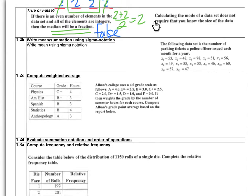The second true/false question: calculating the mode of a data set does not require knowing the size of the data set. The key is remembering that mode means the most frequent number. You don't need to know whether there are 10 or 20 elements — you just need to identify the number that shows up most frequently. So this statement is true.